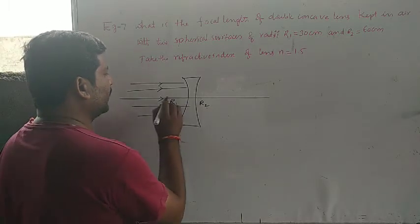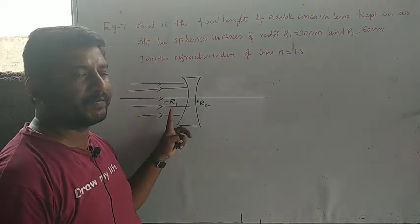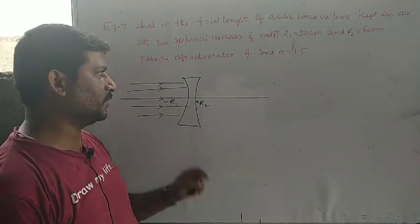It should be taken as negative. It should be taken as positive. For concave surface, radius of curvature is negative. For convex surface, radius of curvature is positive.